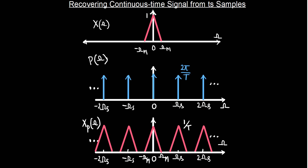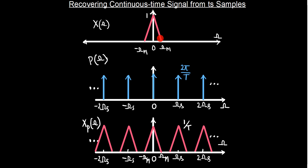In the previous module we have seen that when we sample the continuous time signal, the spectrum or the Fourier transform of the original signal gets replicated at every integer multiple of the sampling frequency. You can see that the original signal, if it is having the spectrum something like a triangular shape as drawn here, then the spectrum of its sampled version is going to look something like this.